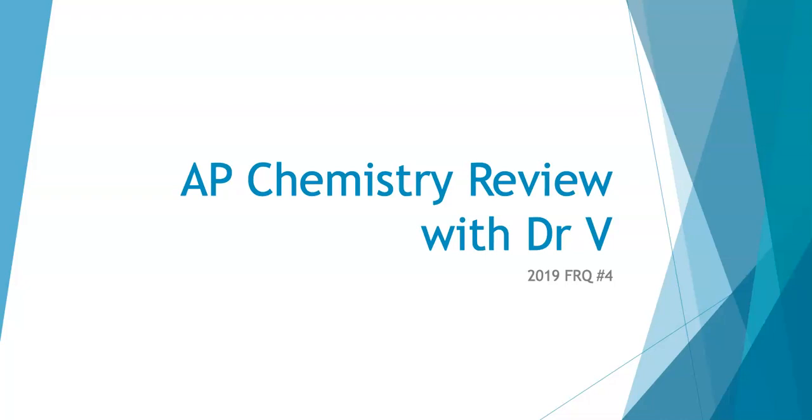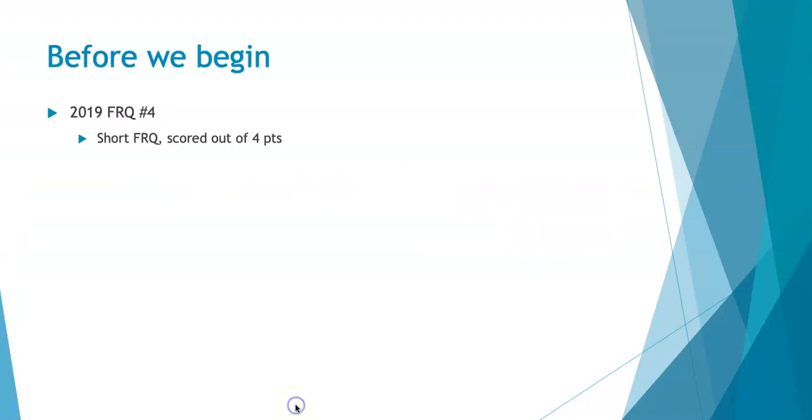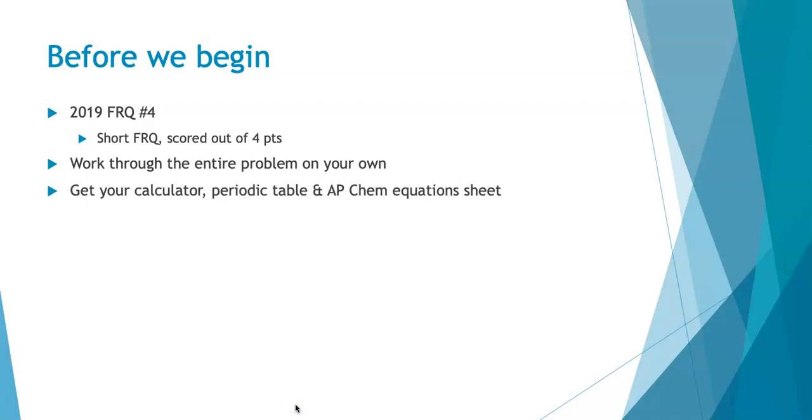Hi, it's time for some AP Chemistry review. It's me, Dr. V, and I'm here to help you get ready for the AP Chemistry exam in May. Today, we're going through free response question number four from the 2019 exam. This was a short free response question, scored out of four points. What I want you to do before you listen to my webcast is to try to work through the entire problem on your own, either all four parts or each part individually, and then listen to my solution. That's really what's going to help you the most. In order to do that, you need your calculator, periodic table, and formula sheet. And then you can keep track of your score as you go, which is really helpful. Did you put down enough information to demonstrate understanding of that concept and skill? That's really what you're aiming for, so let's jump right in.